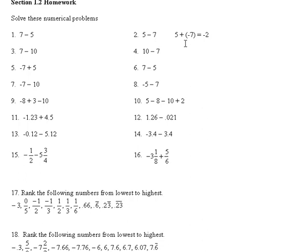You can look at it as 5 plus a negative 7, and the signs would be different, so you find the difference — you subtract their absolute values. The absolute value of negative 7 is 7; 7 minus 5 is 2. The dominant number was the 7, which has a negative sign on it, so it's negative 2.